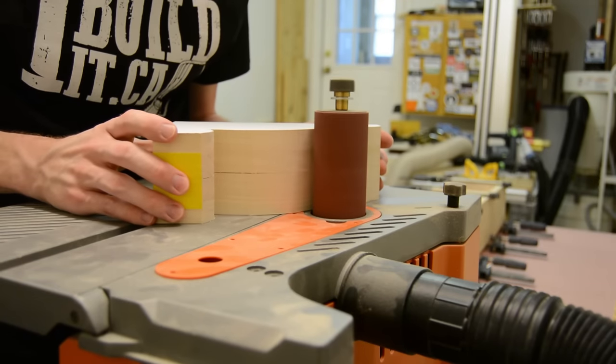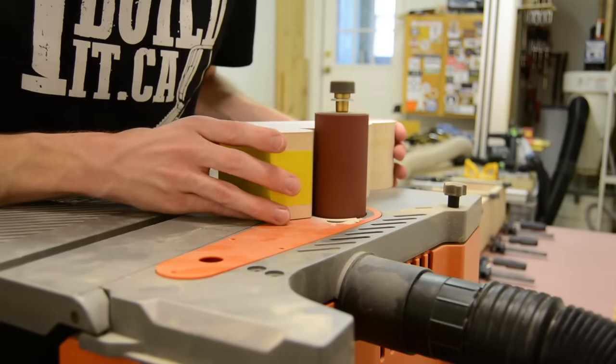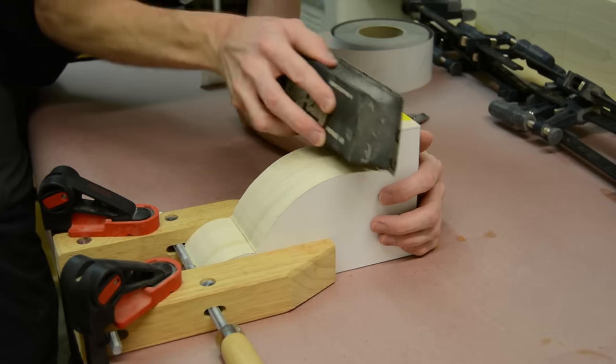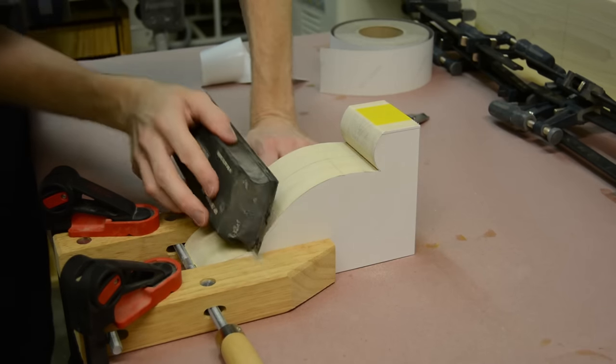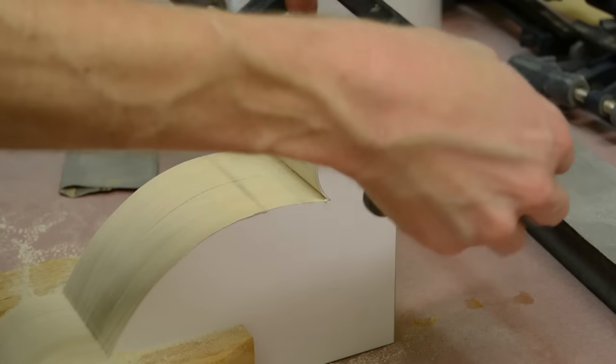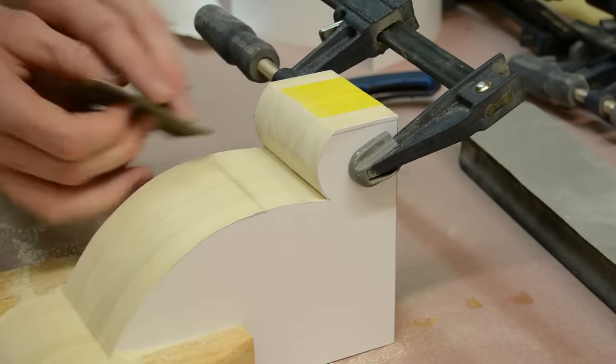The oscillating spindle sander works great when it comes to actually smoothing out these cuts. And just a little bit of hand sanding is all that's needed after that to get into some of the hard to reach areas. The first time that I made one of these, I sanded them completely by hand and that was quite a bit more work.